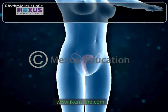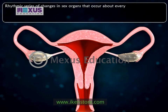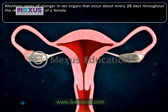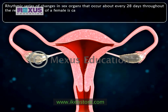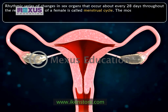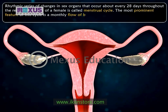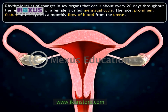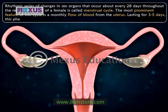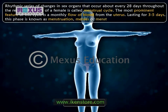A rhythmic series of changes in sex organs that occur about every 28 days throughout the reproductive life of a female, from puberty to menopause, is called the menstrual cycle. The most prominent feature of this cycle is a monthly flow of blood from the uterus, lasting for 3 to 5 days. This phase is known as menstruation, menses, or menstrual period.